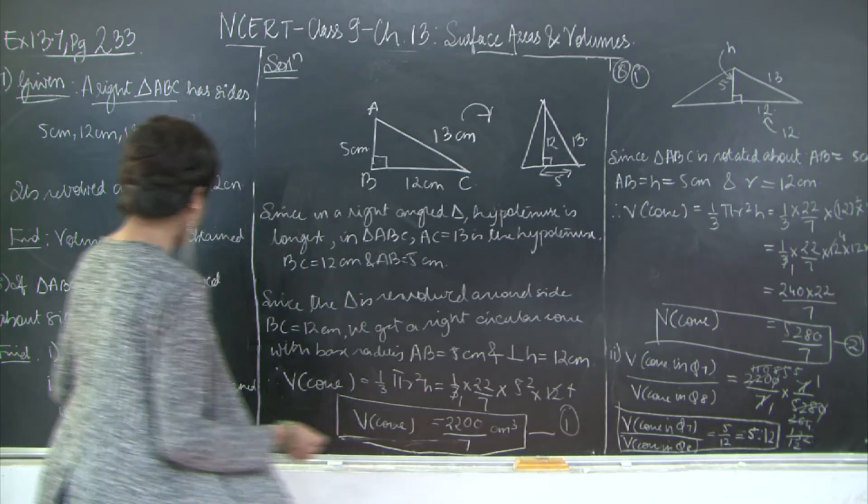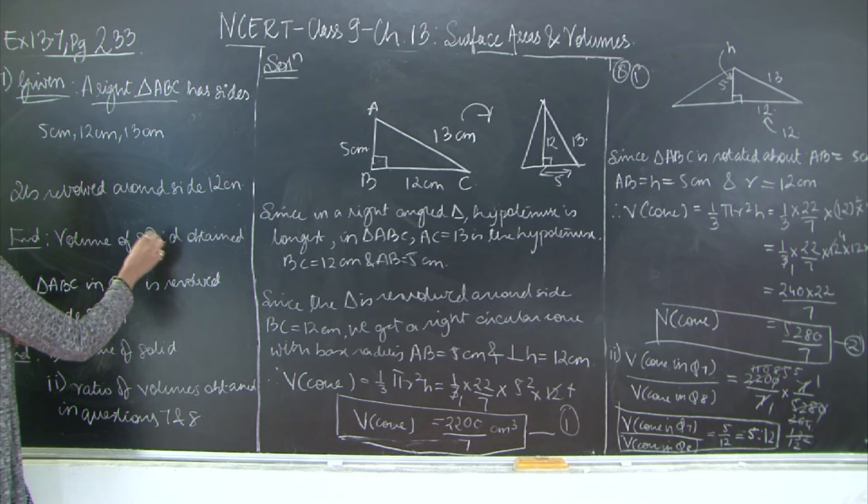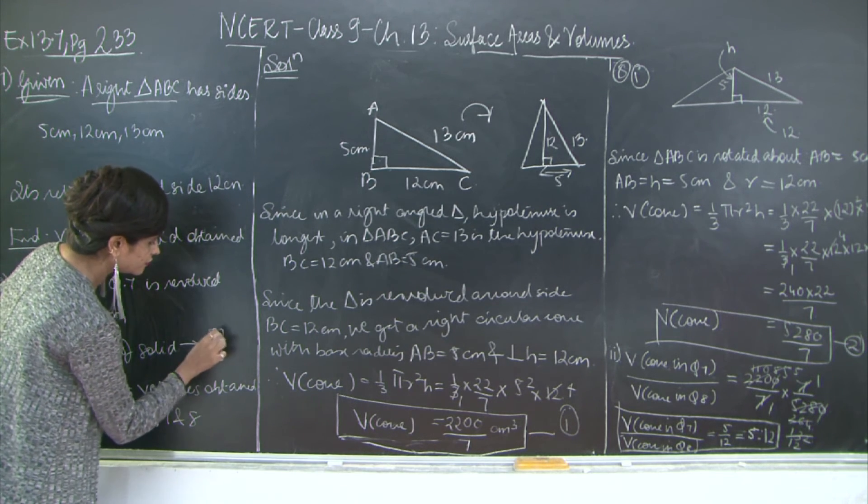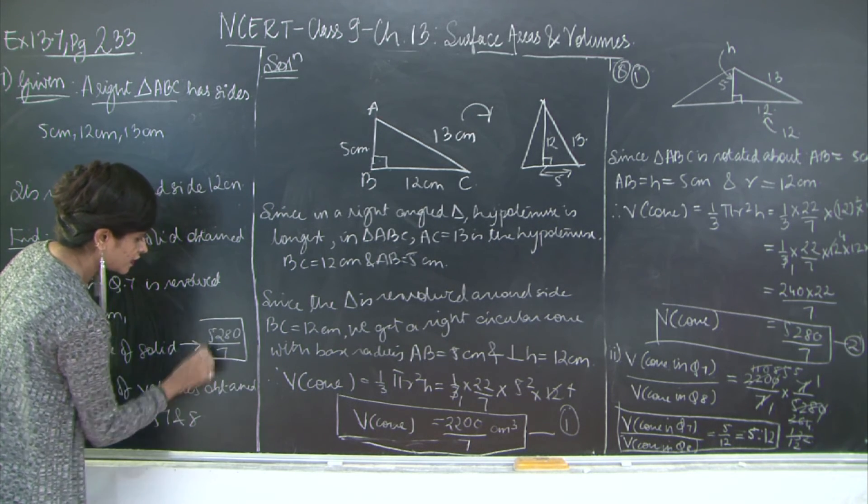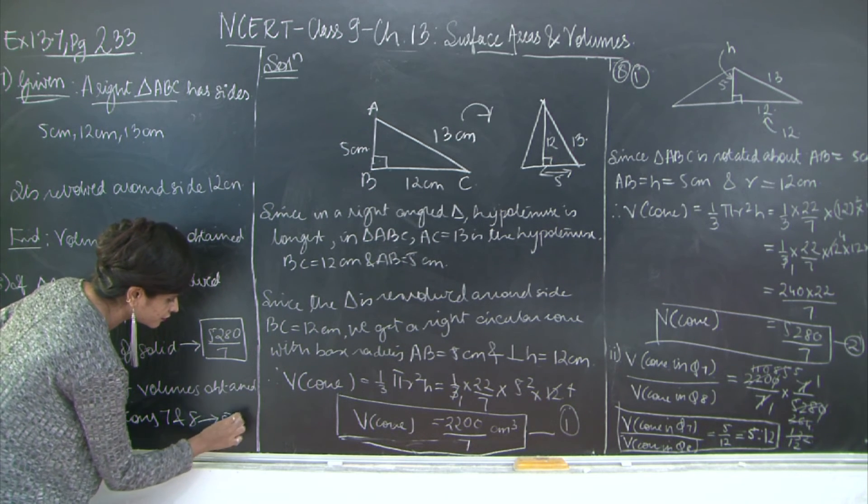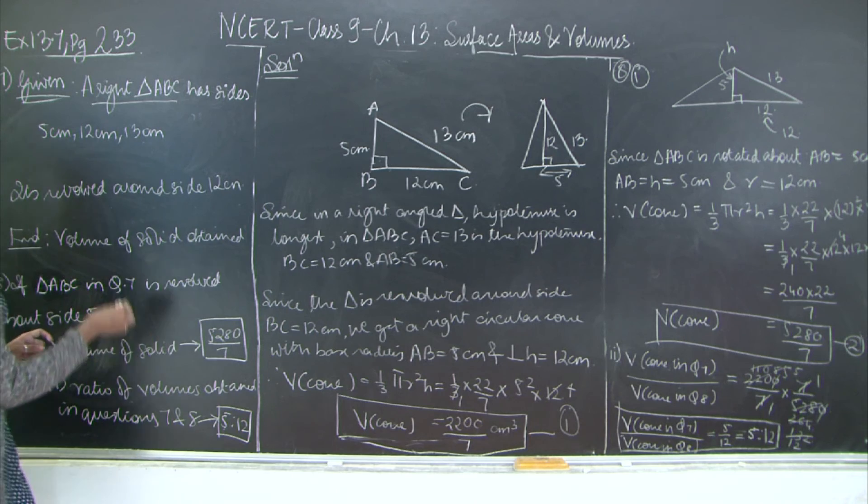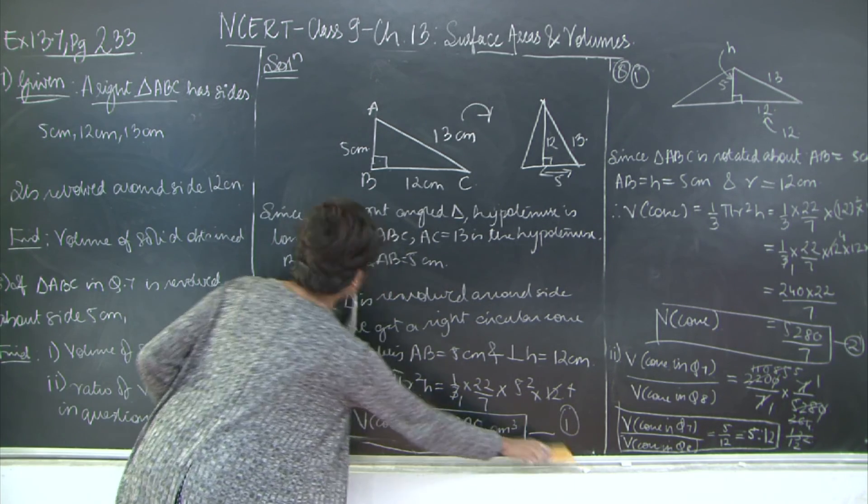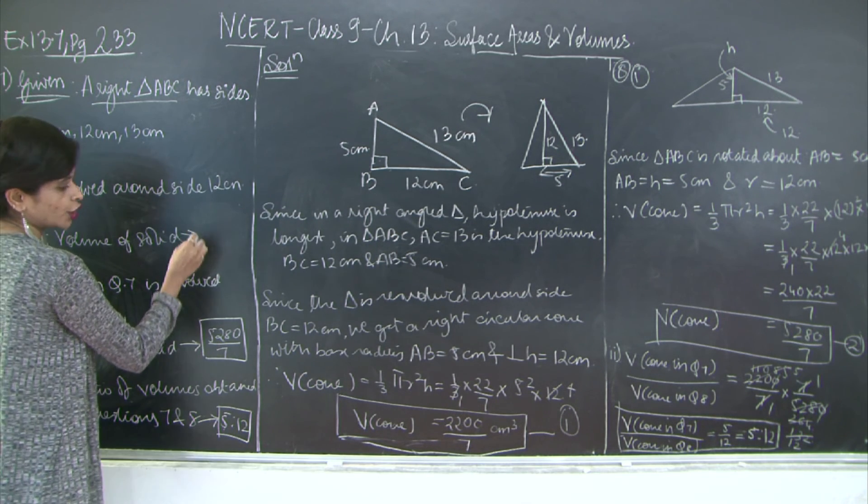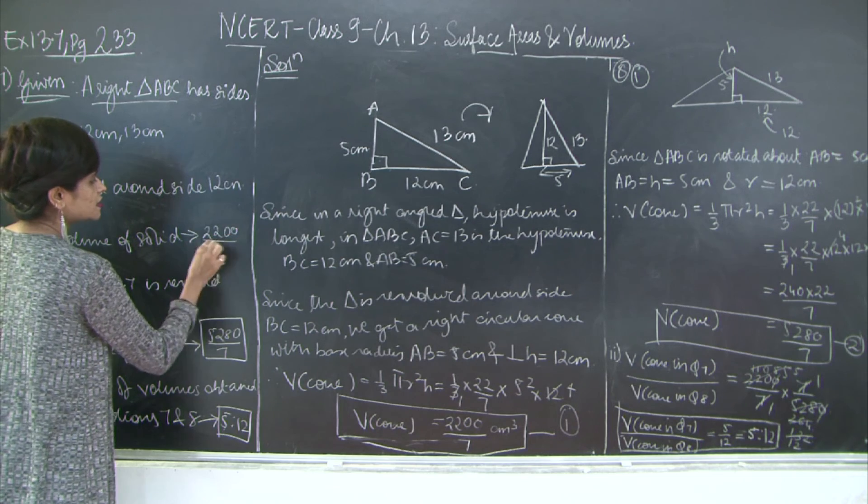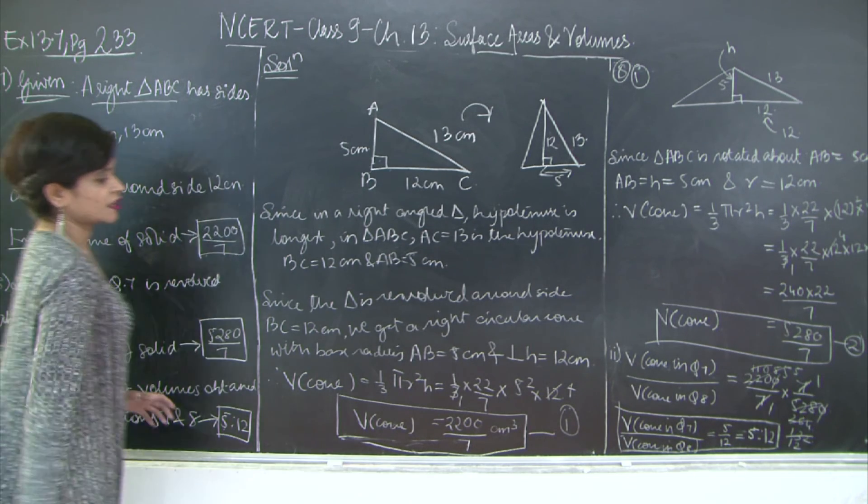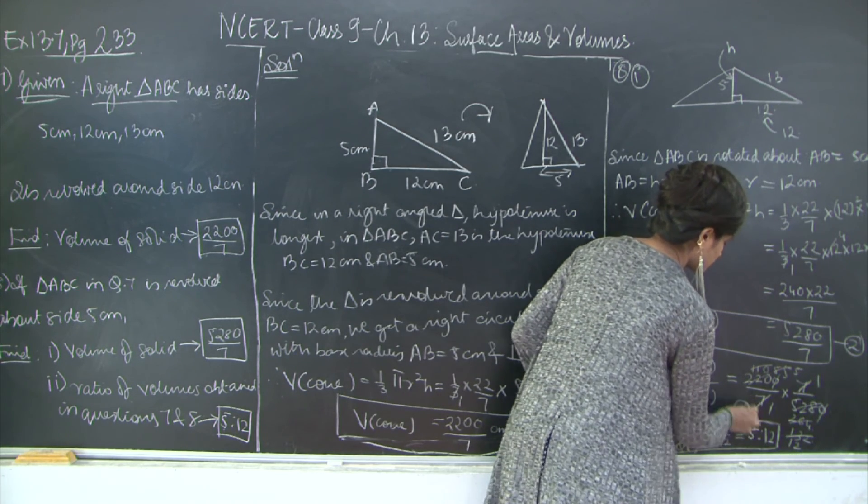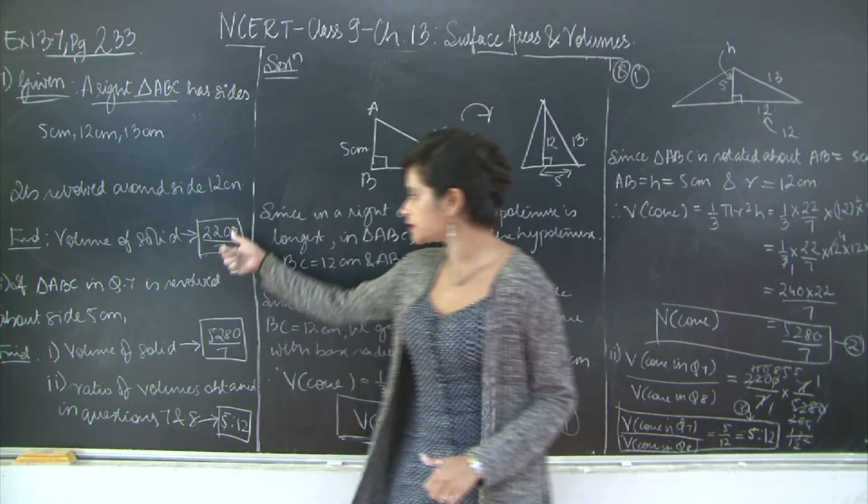This is your answer. So I am just going to write down the answers out here. This is going to be 5280/7. This is going to be 5 is to 12. So volume of solid is equal to 2200/7. Please take a look at the solution. You have 1, 2 and this is 3. And the answers are listed here.